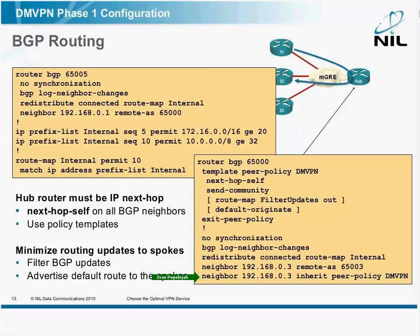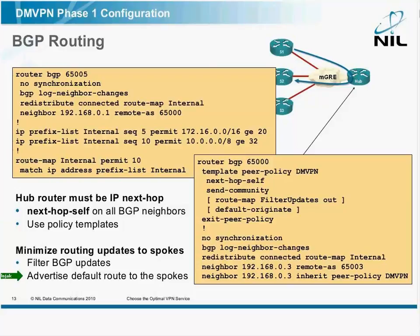The hub router must be IP next-hop, which means you should use next-hop self on all eBGP neighbors. The best way to do it is through policy templates. If you want to minimize routing updates, filter them, or advertise the BGP default route to the spokes with the default-originate command.